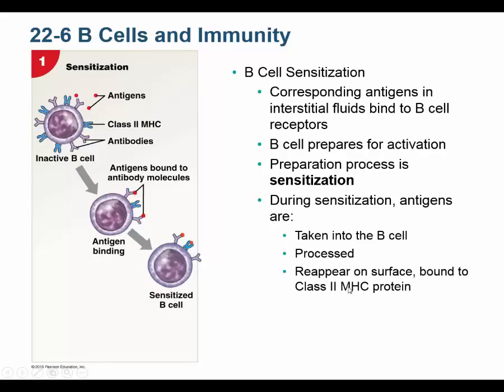Alright folks, welcome back. This is going to be B-cell activation, which we touched on briefly but haven't talked about in detail. This is a long one because we have to talk about antibodies, because that's what B-cells make. First of all, what you see here is the sensitization step — that is telling the B-cell to make antibodies. How that happens is foreign antigens bind these antibodies sticking off of the B-cell.